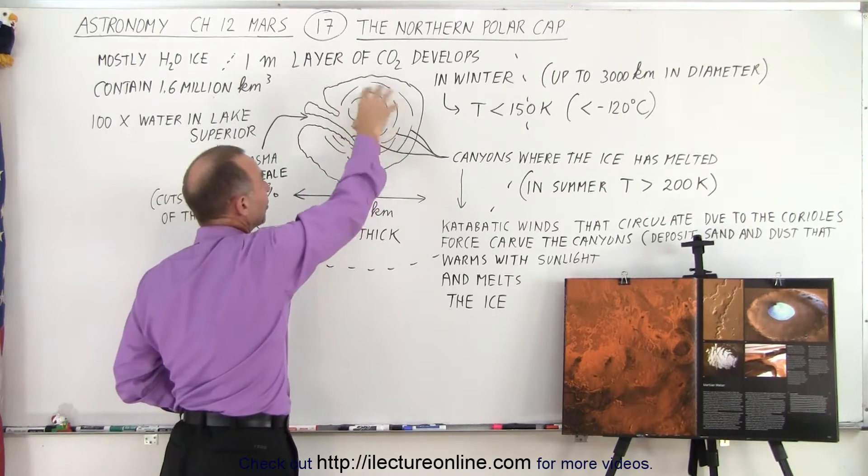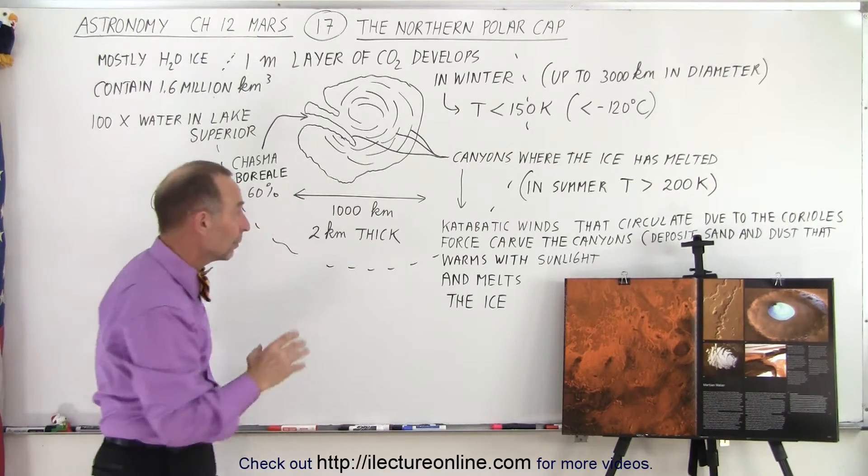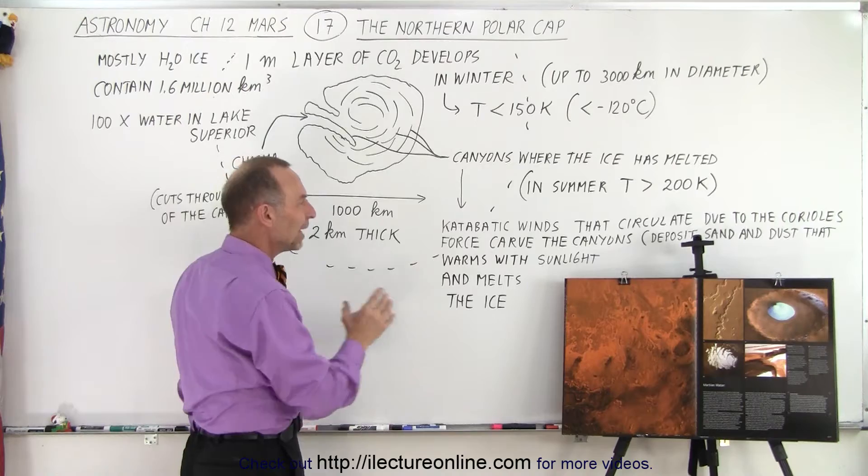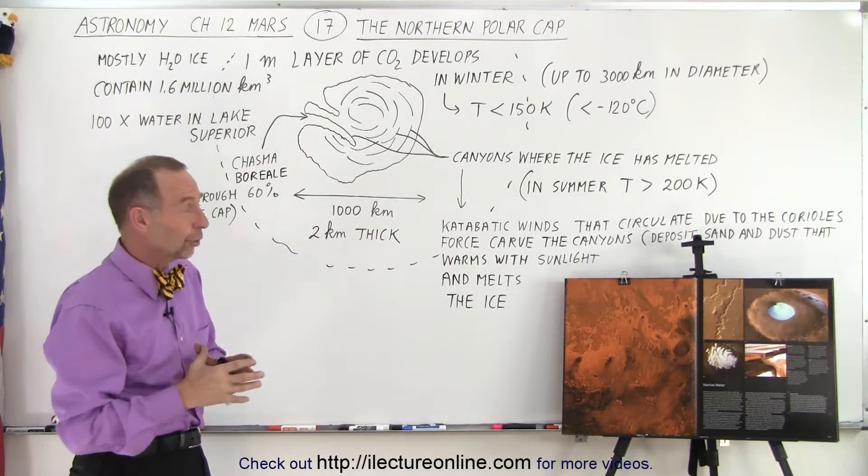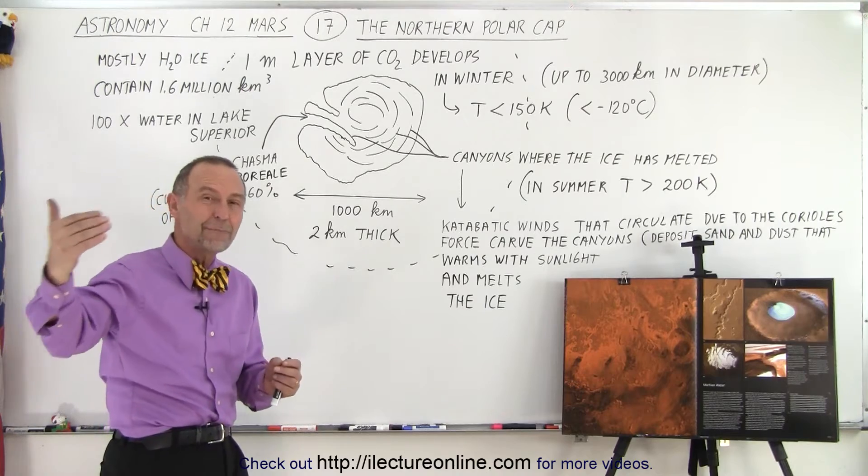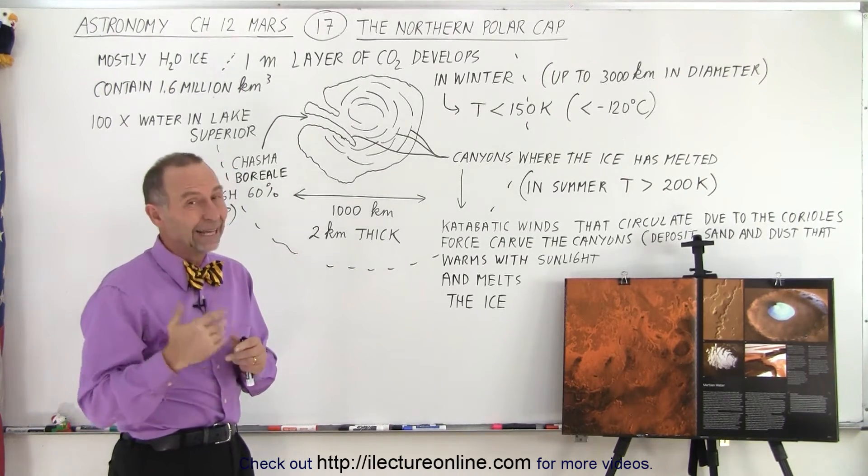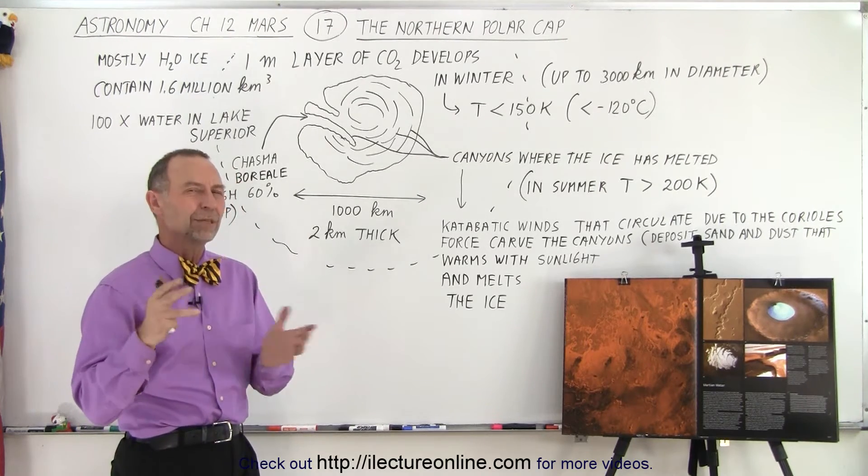These canyons and grooves were carved by tremendously powerful winds called katabatic winds. They're the same type of winds that we have on the Southern Polar Cap on Earth. These tremendously powerful winds will blow at 100, 200 kilometers per hour.